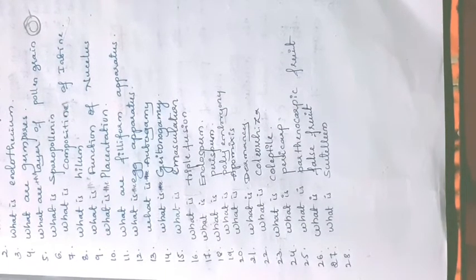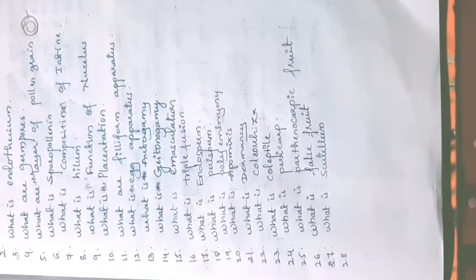What is a false fruit? False fruits are fruits developed by other parts of the plant along with the ovary. What is scutellum? Scutellum is a single cotyledon in monocots — the cotyledon of a monocot plant is called scutellum.